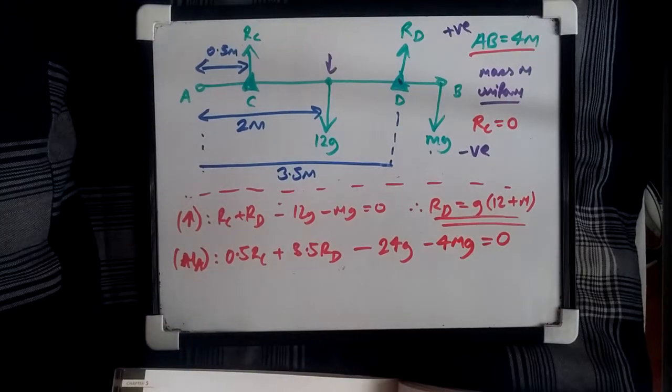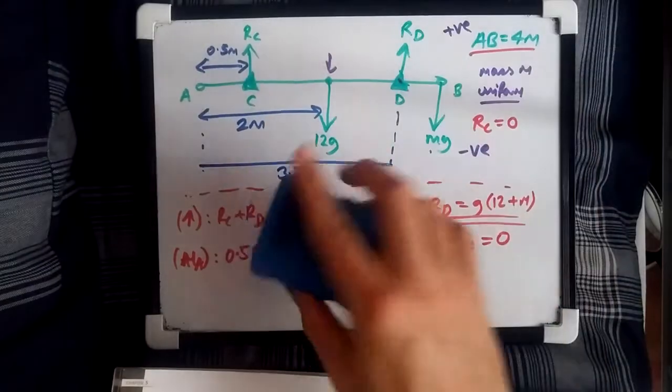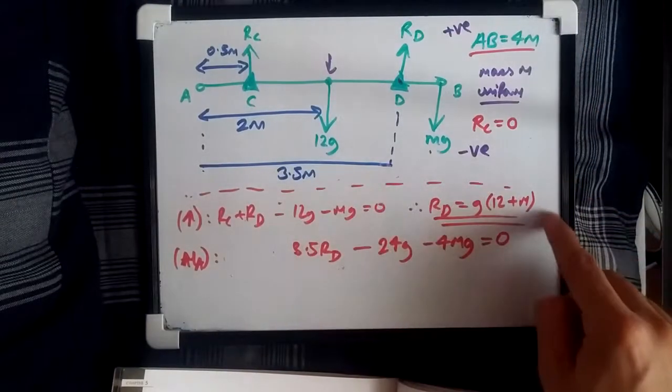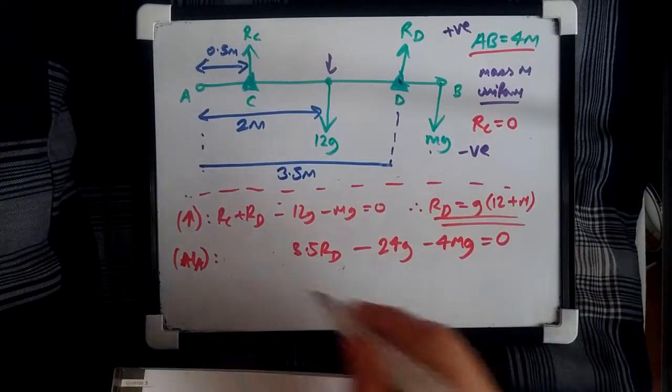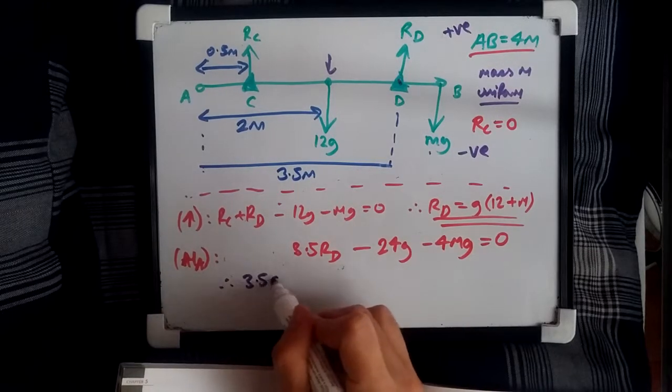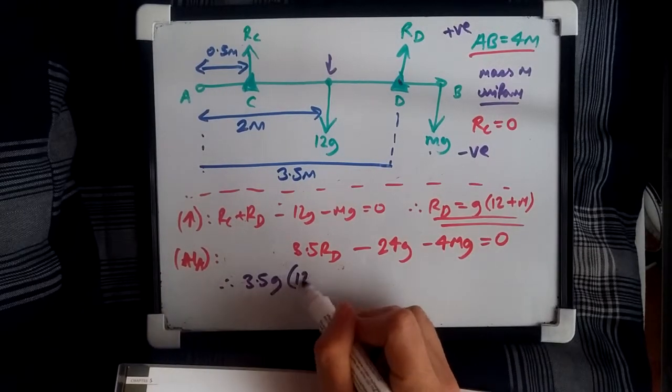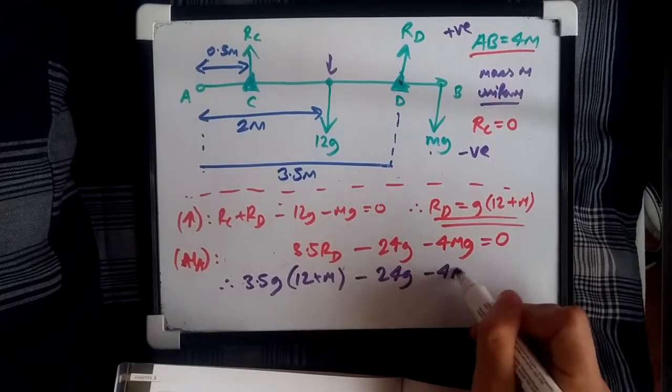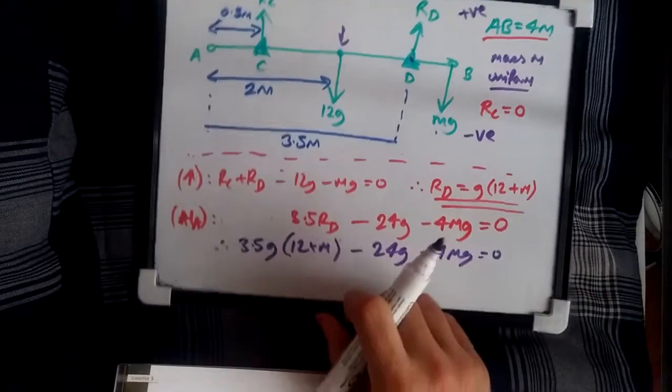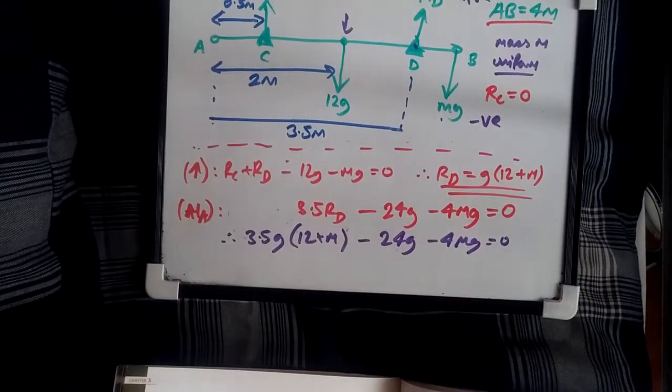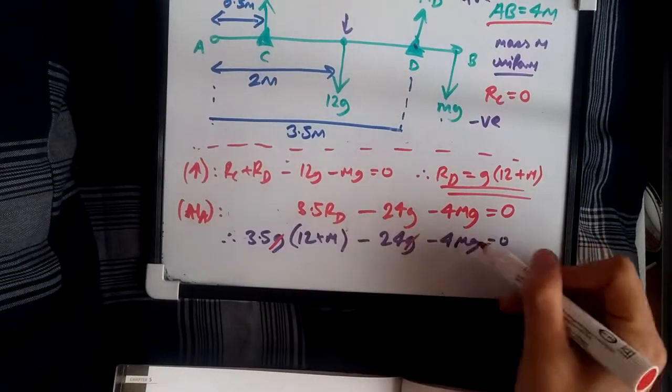Knowing that RC again equals 0, we can cancel this one now immediately, or just rub it out. And knowing that RD was G times 12 plus M, we can just, therefore, say our new equation is 3.5G bracket 12 plus M, minus 24G minus 4MG. The cool thing about this equation is that everything is in terms of G, so instantly, we can knock out the G. So, this is a nice way to solve things, guys.